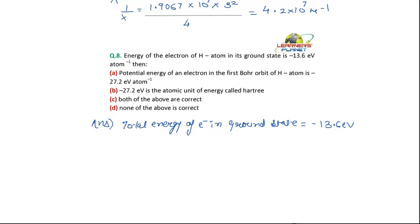Now, regarding this total energy - what is asked is: the potential energy of an electron in the first Bohr orbit of hydrogen atom is 27.2 electron volts per atom. For this, we need to calculate how much potential energy an electron has.